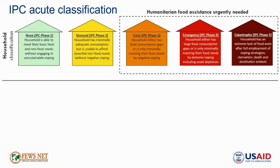For classifying and mapping acute food security outcomes, FEWS NET uses the globally recognized IPC scale. The scale has five phases of increasing severity, defined in terms of the extent to which households are able or unable to meet their food and essential non-food needs. These phases at the household level range from phase one, none, to phase five, catastrophe. It is in phase three and higher that households require urgent humanitarian assistance to prevent food consumption gaps or damage to livelihoods that would threaten their food consumption in the future.